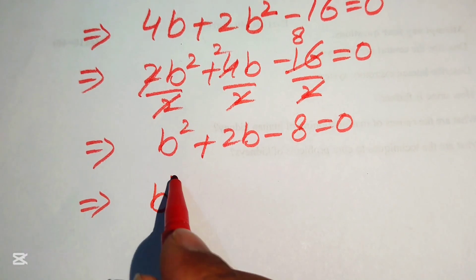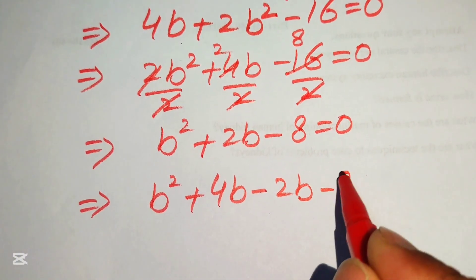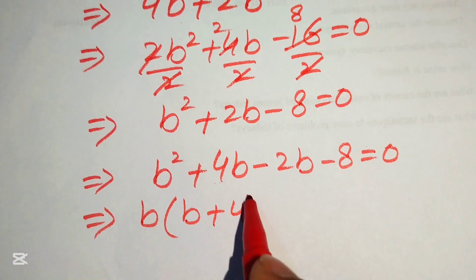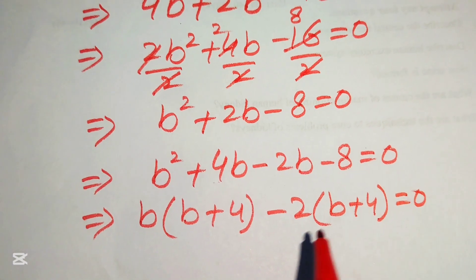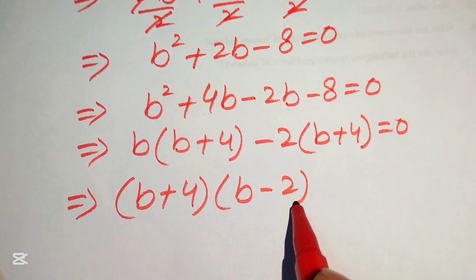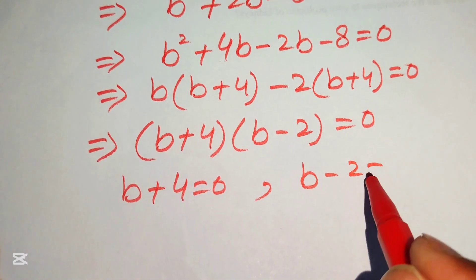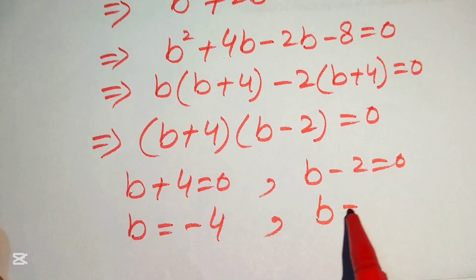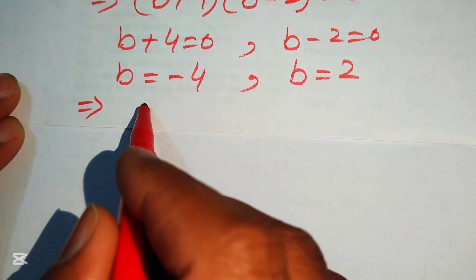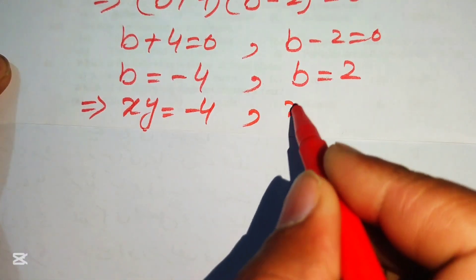Factoring b² + 2b − 8: we split as b² + 4b − 2b − 8 = 0, since 4−2 = 2 and 4×(−2) = −8. Taking common factors: b(b+4) − 2(b+4) = 0, giving (b+4)(b−2) = 0. So b = −4 or b = 2, meaning xy = −4 or xy = 2.